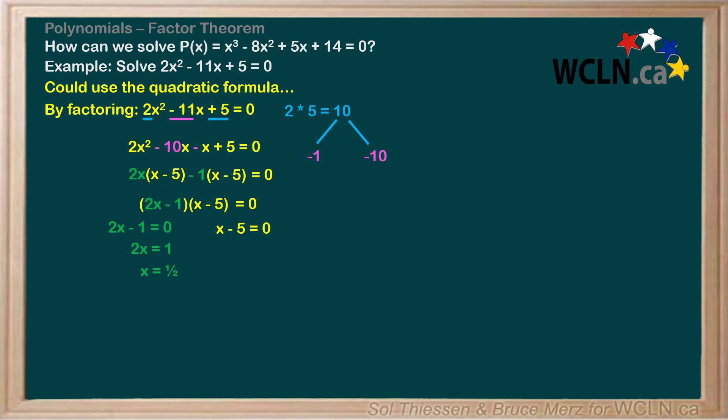Doing the same with x - 5, we add 5 to both sides to get x = 5. The two values of x that cause our polynomial to evaluate to 0 are 1/2 and 5. These are the roots of our polynomial. Take note of how they are related to the factors of the polynomial.